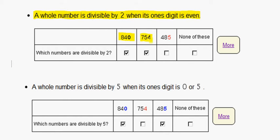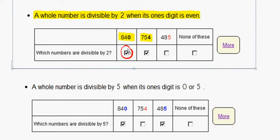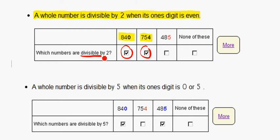754 ends in 4, which is an even number, so it is divisible by 2. But 485 ends in 5, which is an odd number, so it is not divisible by 2. So, we can mark 840 and 754 as divisible by 2.